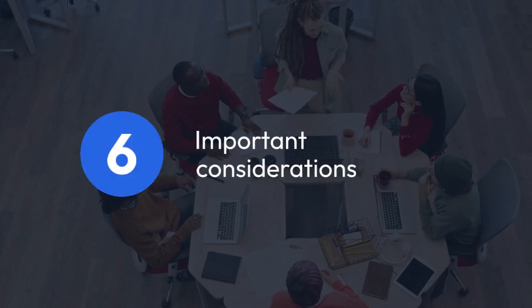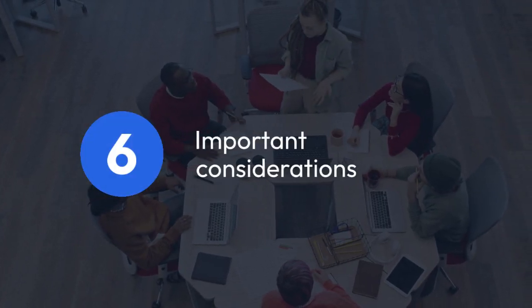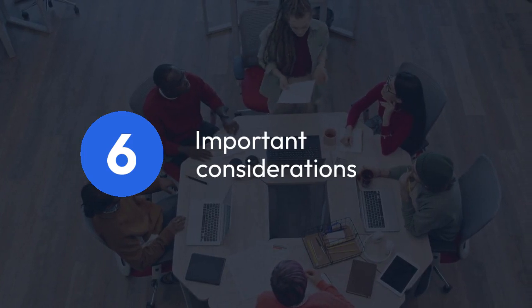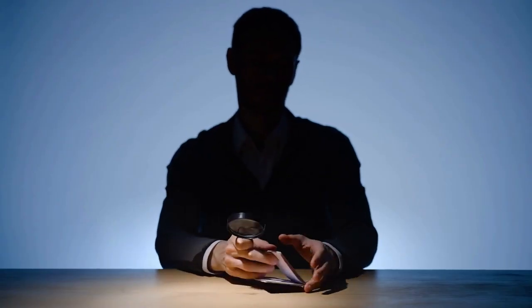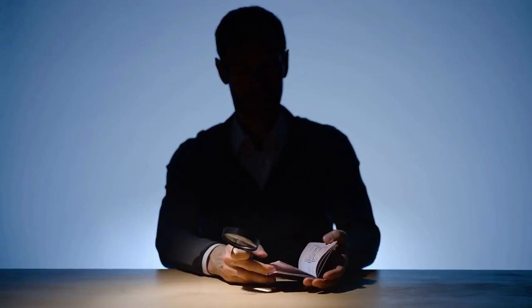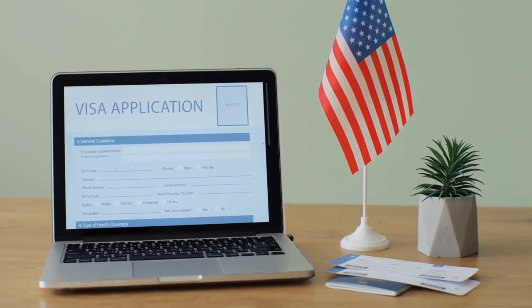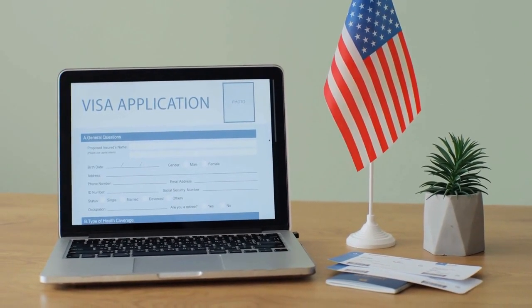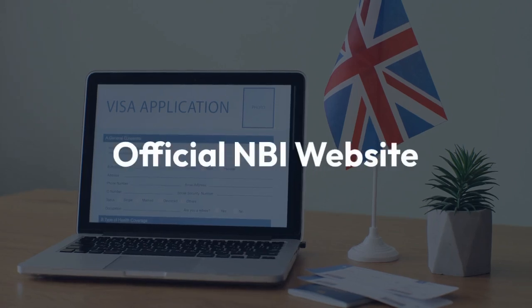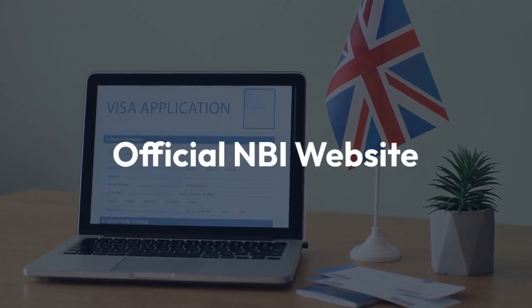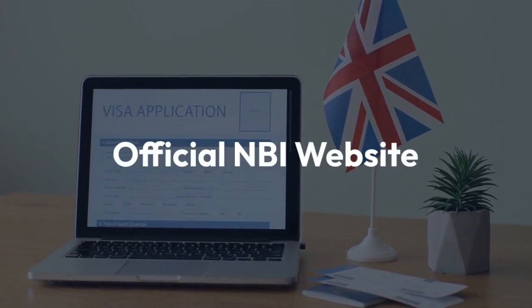Step 6: Important considerations. Be aware that canceling and resubmitting an application may potentially delay the processing of your request. Follow the official NBI guidelines and instructions carefully throughout the entire process. If you are unsure about any part of the process, contacting the NBI directly for assistance is always recommended. You should always refer to the official NBI website for the most up-to-date instructions and information on the application process.